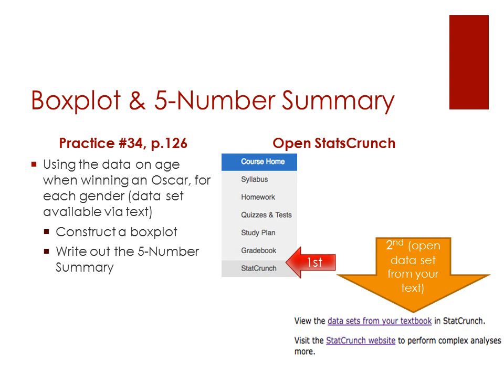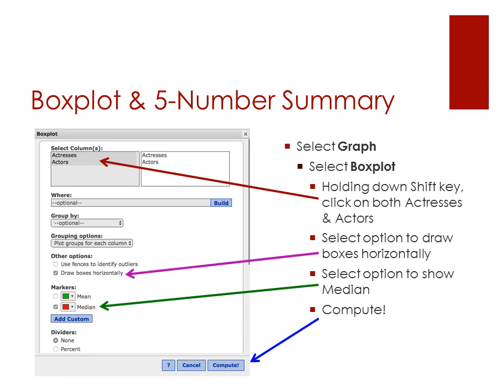Opening StatCrunch, keep in mind this time we're going to use a data set from your textbook, so you need to go through the options to open up a data set. Once you select that option, find the data set titled 'Age for Winning an Oscar and Gender' and open it up. Then select Graph and select Box Plot. Holding down your Shift key, click on both Actresses and Actors to move them into the selected columns. Select the option to draw boxes horizontally and select the option to show the median, then hit Compute.